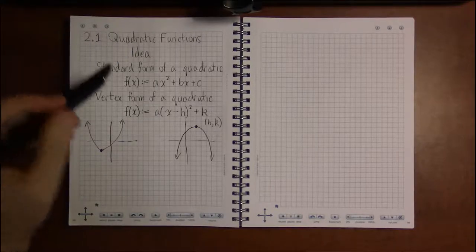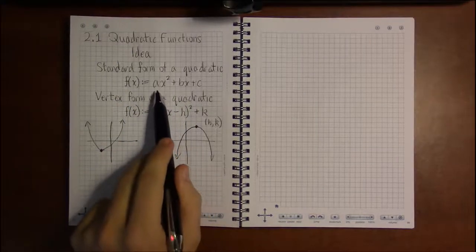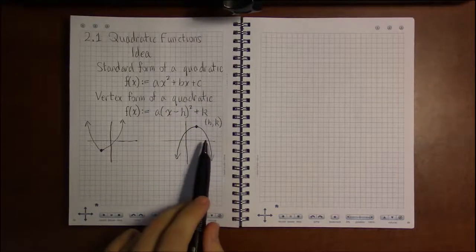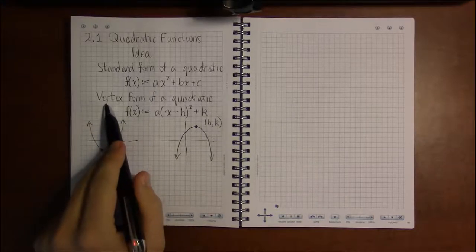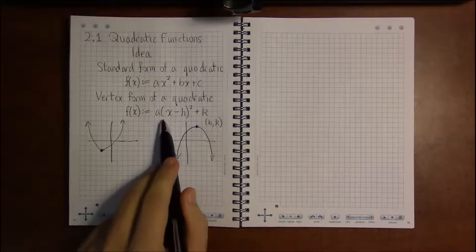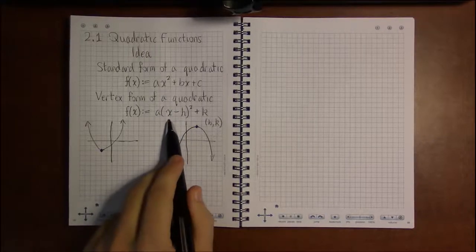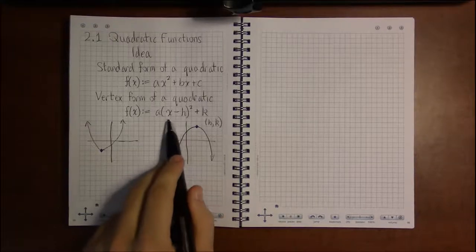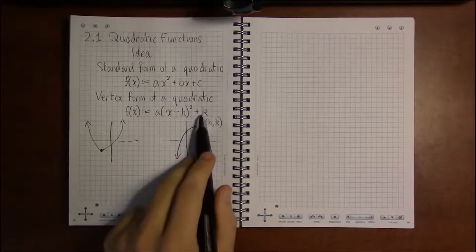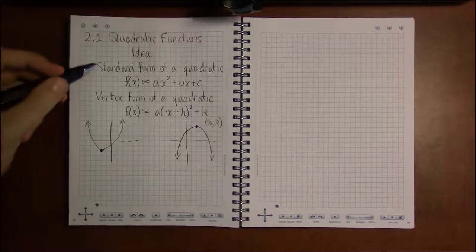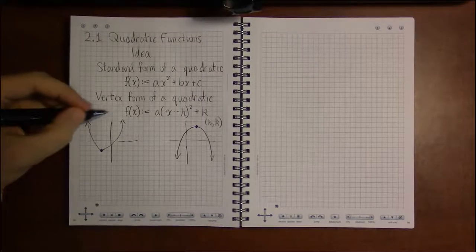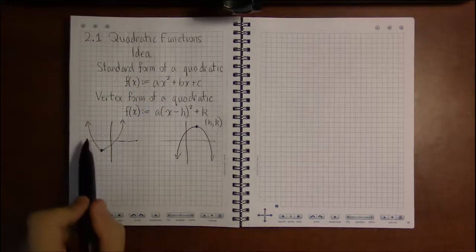Or at least quadratic functions do. The standard form is f(x) = ax² + bx + c, and another form is known as the vertex form where we have a(x - h)² + k. So this is the algebraic shape that a quadratic takes. The geometric...